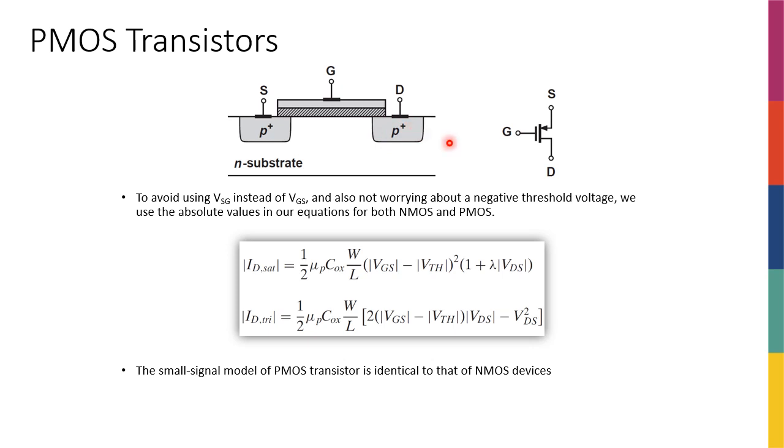My symbol is going to look like this. Similar to BJT where emitter went to the top and collector went to the bottom, this time source goes to the top, drain comes to the bottom.